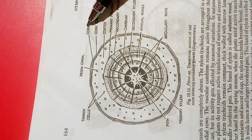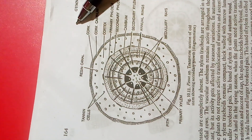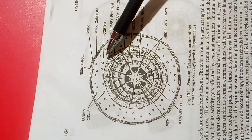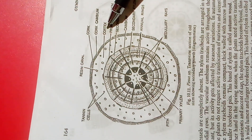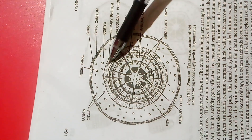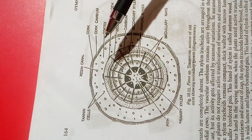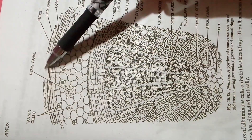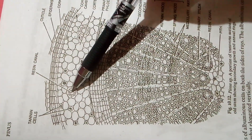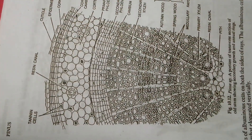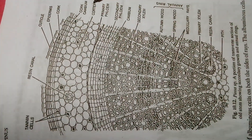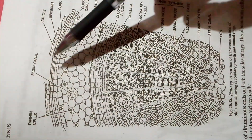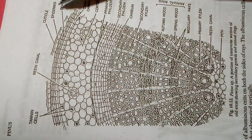The newly formed cork cambium produces dead cells (cork or phellem) towards the outside and living cells of the secondary cortex (phelloderm) towards the inside. Together, these layers of cork, cork cambium, and phelloderm constitute the periderm. As seen in the enlarged picture, the epidermis ruptures and cork cells form a protective covering in the old stem.